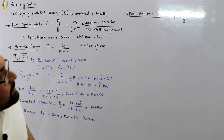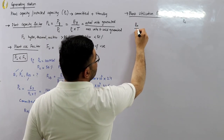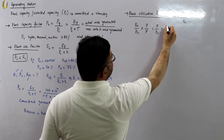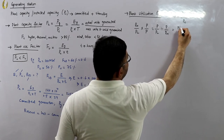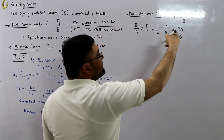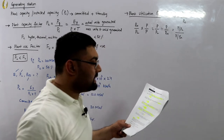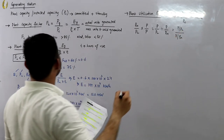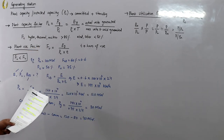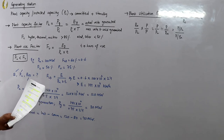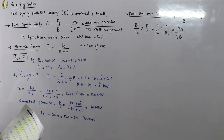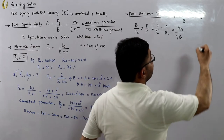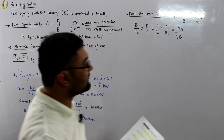If we multiply and divide PM/PC by the average power P, we get: (P divided by PC) divided by (P divided by PM). Now P divided by PC is the plant capacity factor FC, and P divided by PM is the use factor FU. So the utilization factor FUF equals the plant capacity factor FC divided by the use factor FU.